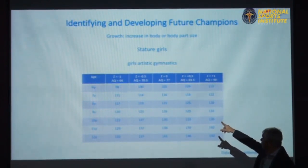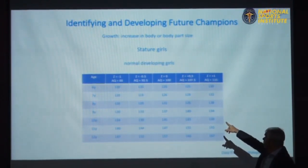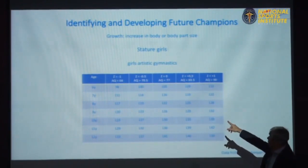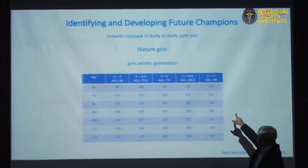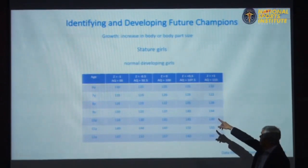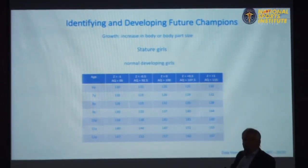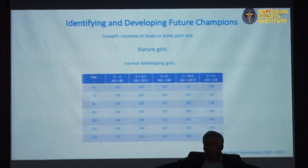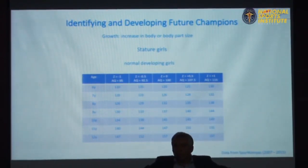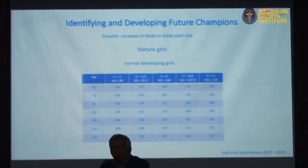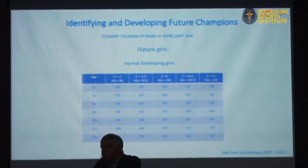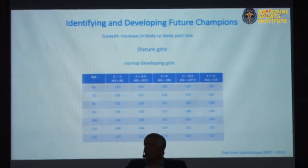Going back to the previous slide, the normal average was 120, with a standard deviation of 8, compared to 10 here. So if you look at the data, my gymnasts fall somewhere lower on that distribution. That's the data from my gymnasts compared to the normal population.